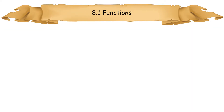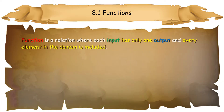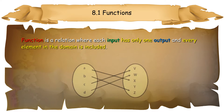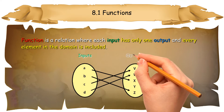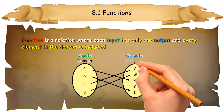8.1 Functions. Definition of Functions: A function is a relation where each input has only one output, and every element in the domain is included. A function relates inputs to outputs. It takes elements from a set called the domain and relates them to elements in a set called the codomain.